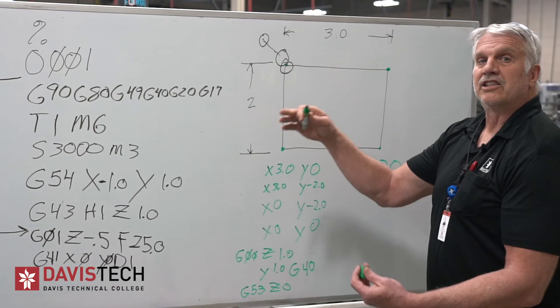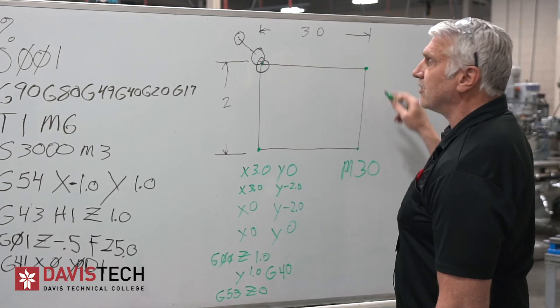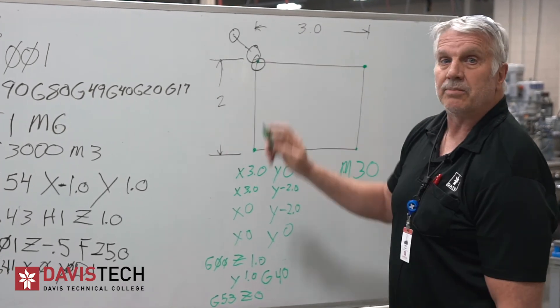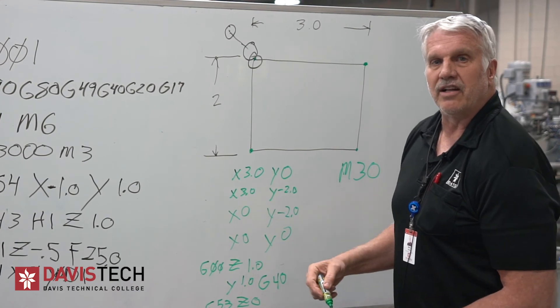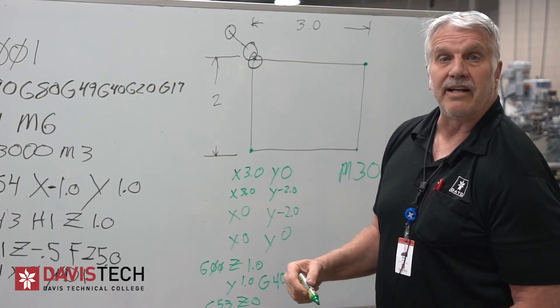You just made a simple program with one tool to cut around the outside of a part. That's a three inch by two inch using cutter comp. We'll demonstrate this on the machine here in a minute.